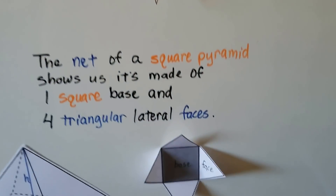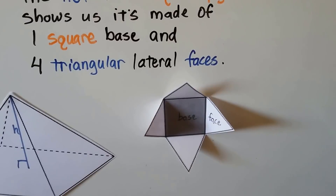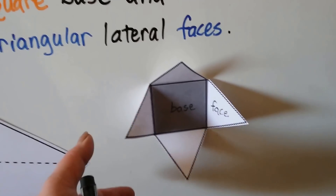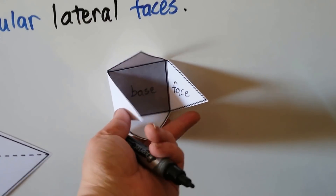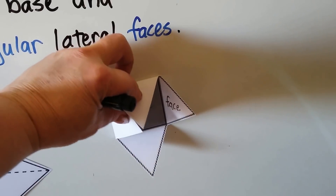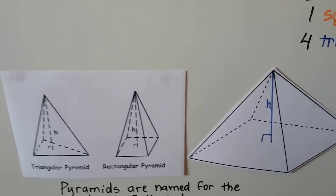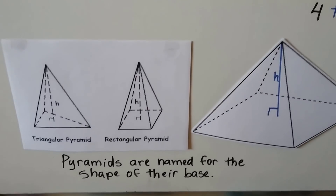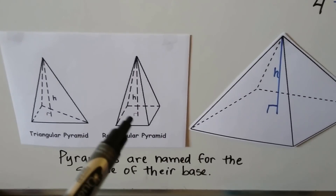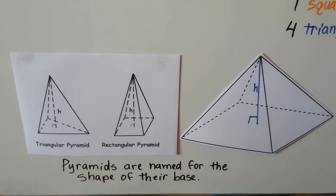The net of a square pyramid shows us it's made of one square base and four triangular lateral faces. We can tape this together and make a pyramid. Pyramids are named for the shape of their base — so a triangular pyramid has a triangle base, a rectangular pyramid has a rectangle base, and a square pyramid would have a square base.